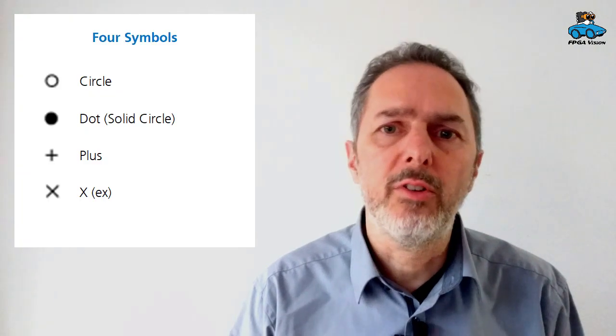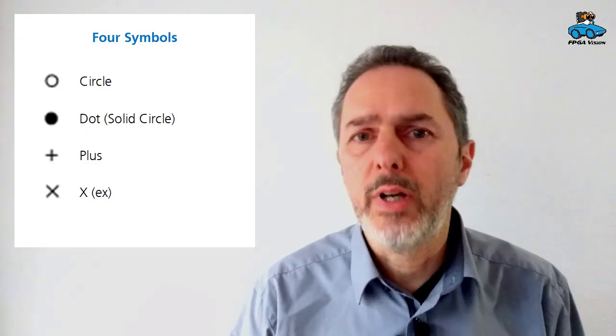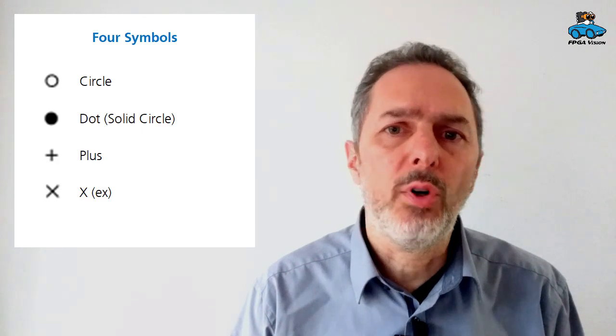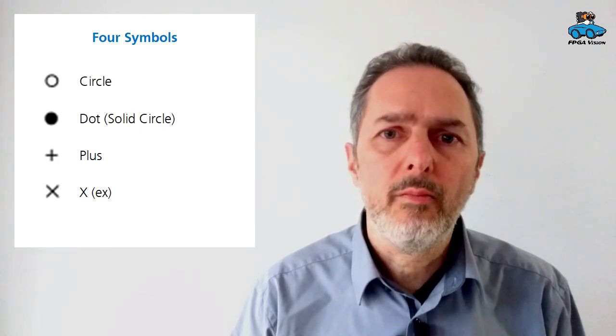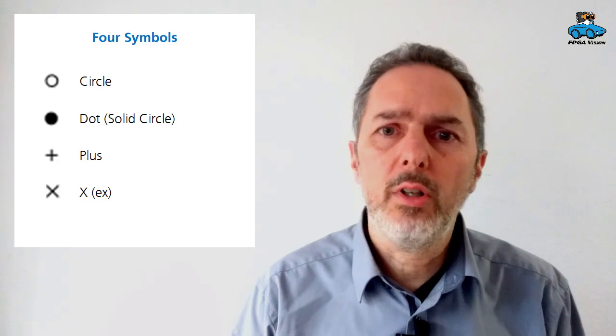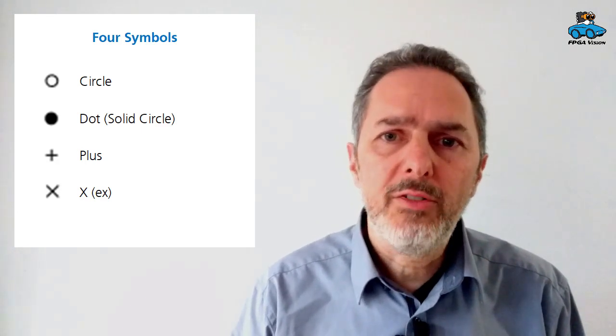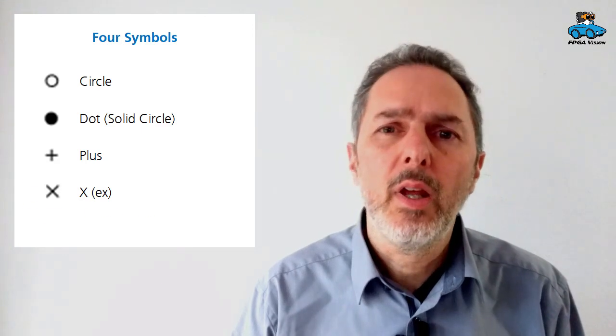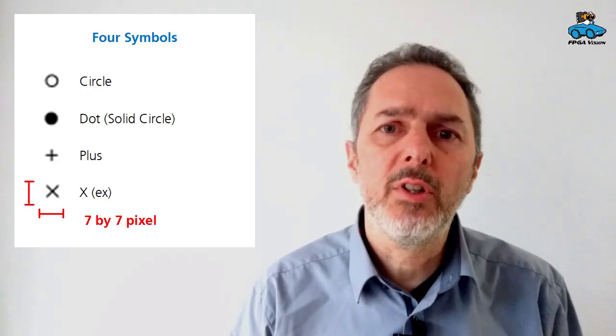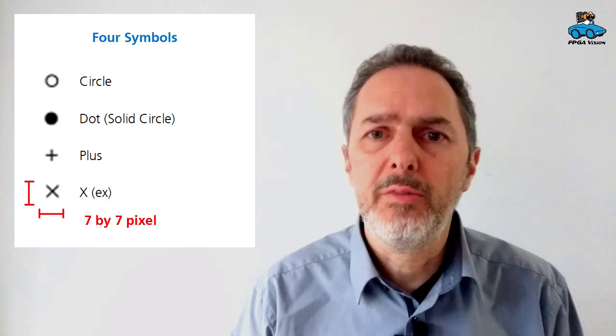In this lecture we don't take a real-life example because it is much easier to understand if we take a scene with reduced complexity. Our application is to identify four different symbols in a grayscale image. These four symbols are a circle, a solid circle or dot, a plus, and an X. We want to have these symbols with a size of 7 by 7 pixels.